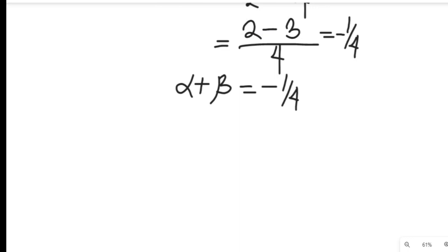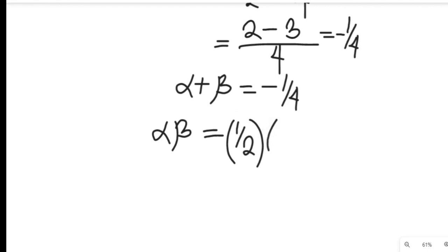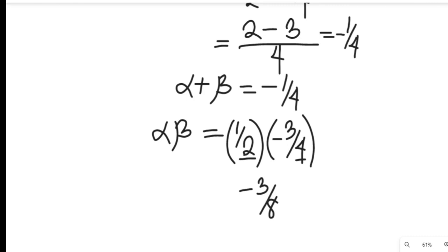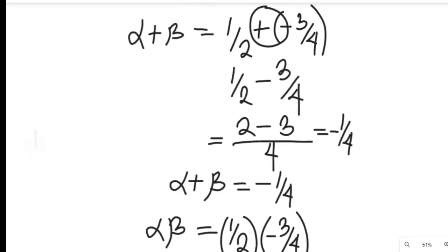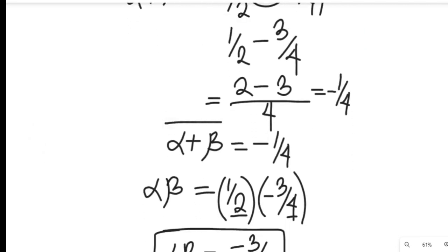The next task is to find the value of alpha multiplied by beta. Alpha multiplied by beta: alpha is 1 divided by 2, multiplied by negative 3 divided by 4. The numerators multiply and the denominators multiply, giving us negative 3 divided by 8. So alpha multiplied by beta equals negative 3 divided by 8. These are the two values we need to find our quadratic equation.